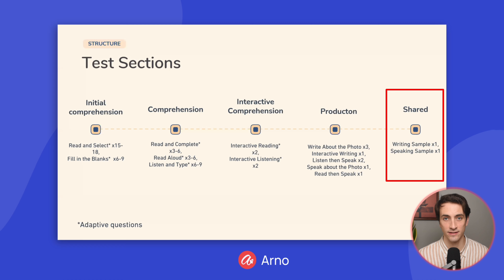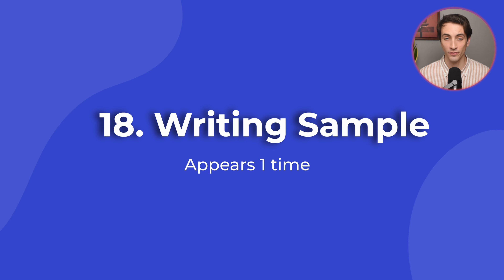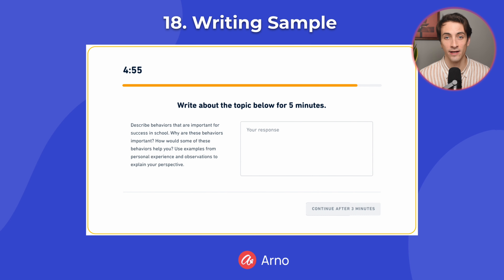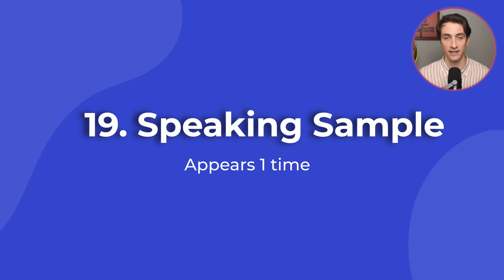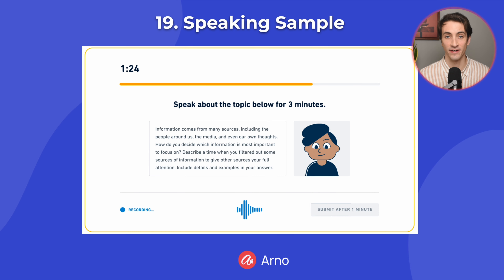The final section of the test is the Shared question types. This section is called shared because your responses to these last two questions will be sent along with your scores so that the recipients can evaluate your English for themselves. First is the Writing Sample, and you'll only see it once. You will be given a topic, and you need to write about it for up to five minutes. Finally is the Speaking Sample, which also appears just one time. You will be given another topic, and you need to speak about it for up to three minutes. Those are all the question types that you will see on the Duolingo English Test. That's it for today's lesson — I'll see you next time.